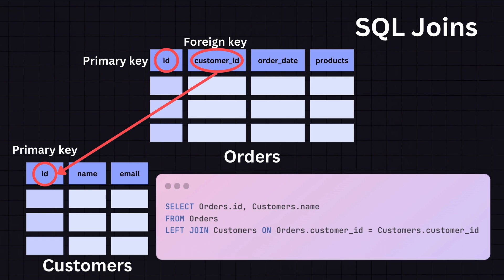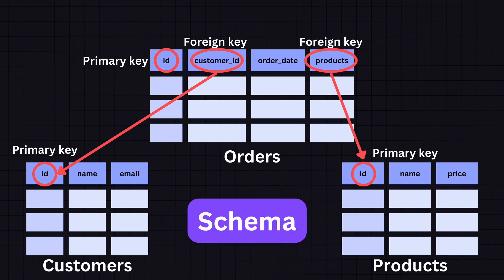If we do the same query but with a left join, it will return all records from the table on the left and the matched records from the table on the right. So the inner join fetches only the orders with corresponding customer information, while the left join fetches all orders including those without corresponding customer information, and the missing values are filled with nulls. The schema defines how the entire database is organized in these tables — it includes tables, the relationships between them, and the structure of each table like columns and data types. We use it as a blueprint for how data is stored, ensuring data is organized consistently.